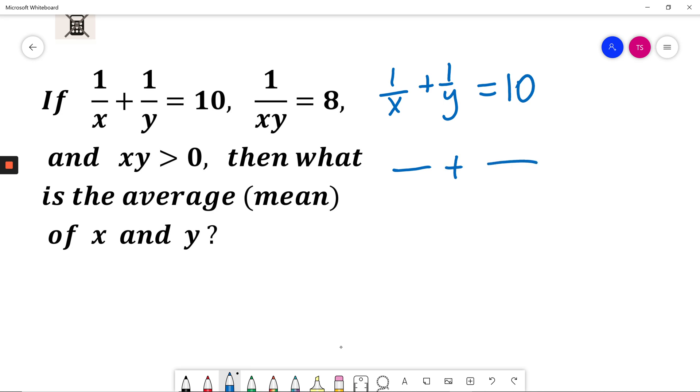I will make a common denominator xy and xy. I multiplied first fraction by y, denominator by y, so I will also multiply numerator times y. I multiplied denominator in second fraction by x, so I will multiply numerator by x. This is equal to 10. Now I have common denominator, so I can just add numerators y plus x, I will write x plus y. This is equal to 10.